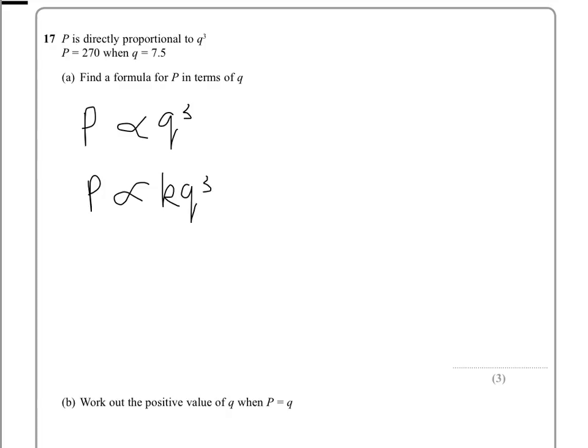Then we substitute in the values they've given us, so therefore 270 equals k times 7.5 cubed. And therefore k equals 270 over 7.5 cubed, which is 0.64. So therefore the formula will be P = 0.64Q³.